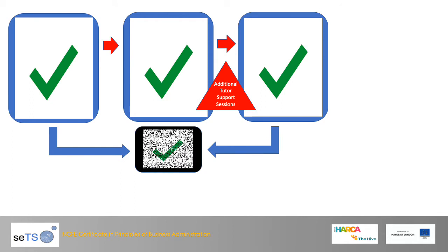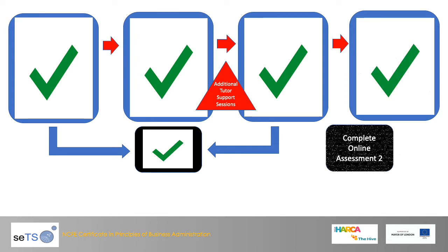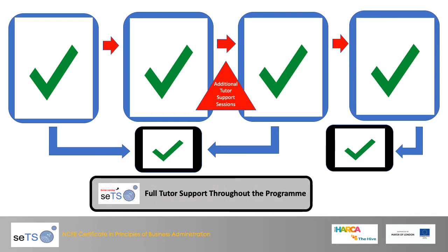From there, you would have gone on to complete your Assessment 1. Following this session — understanding how to store, retrieve and archive information and principles of customer service — and the online teaching support, you should be able to complete your online Assessment 2. There is tutor support throughout the whole programme, and following this session and the completion of both assignments, you should hopefully go on to complete your qualification.